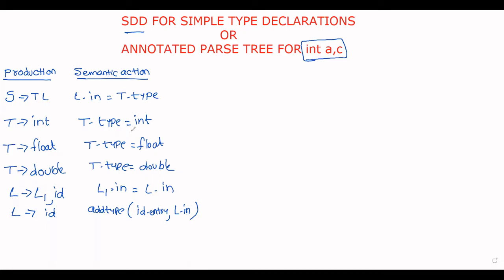Observe in this grammar we are using inherited attributes. Understand carefully: inherited attributes means a node takes the value from its parent or takes the value from its sibling. For example, in the production S → TL, L.in is equal to T.type — that is, L takes the value from its sibling. And L1 takes the value from its parent. This is called an inherited attribute.